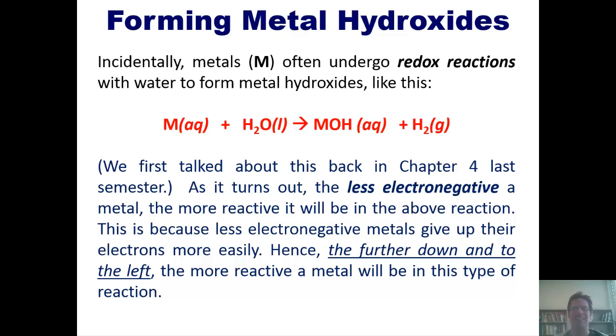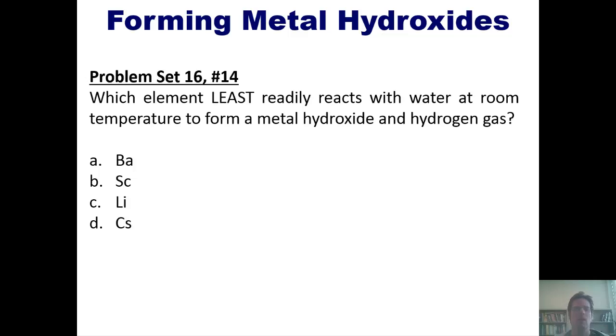The reason is because less electronegative metals give up their electrons more easily. Remember, if you're more electronegative, you want to steal electrons. If you're less electronegative, you want to get rid of them. Hence, the further down and to the left on the periodic table, the more reactive a metal will be in this type of reaction. That takes us to a question. Which element least readily reacts with water at room temperature to form a metal hydroxide and hydrogen gas? Once again, it's going to be the metal that is the least electronegative. That is, the one that's furthest down and to the left on the periodic table.